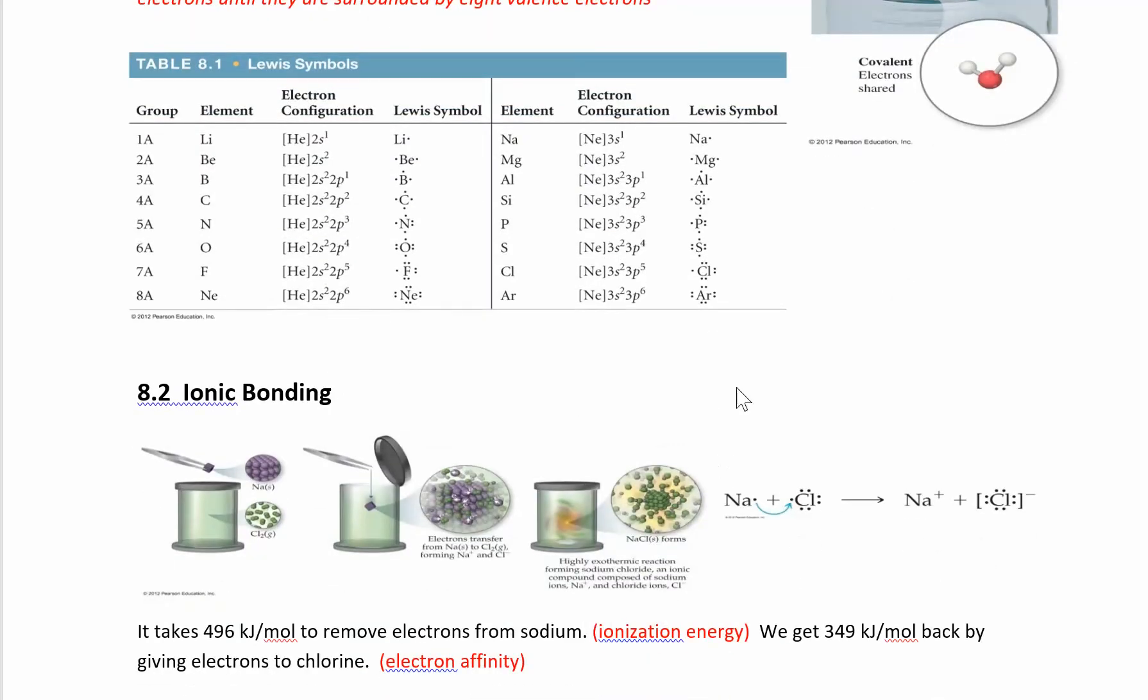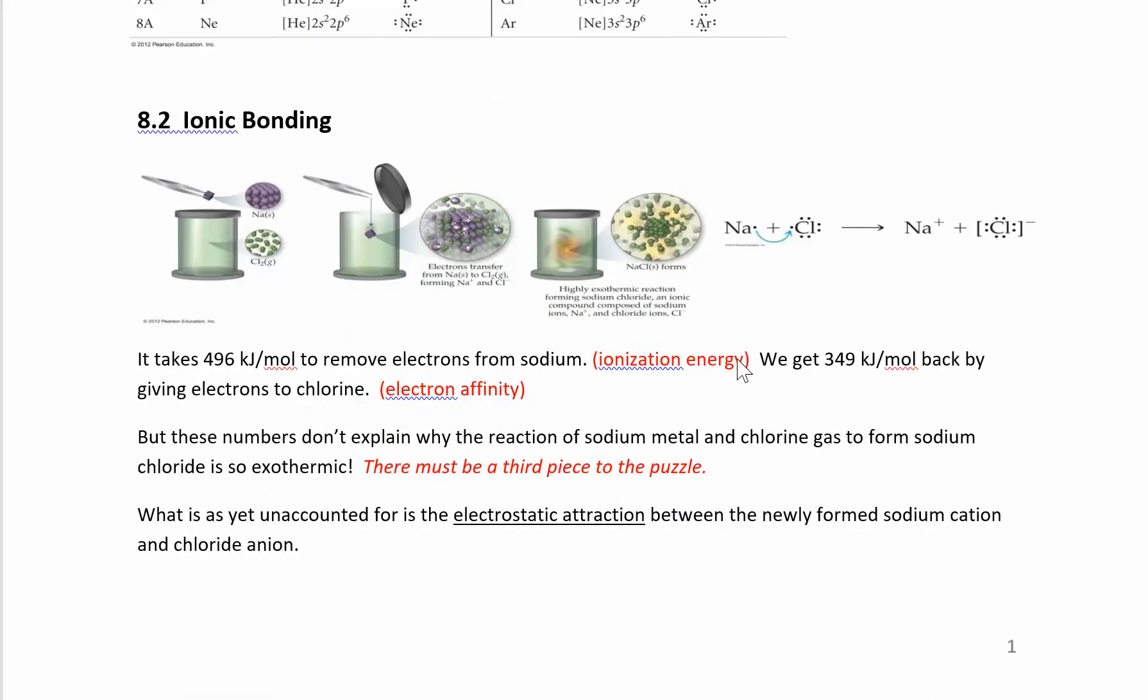So let's look more at ionic bonding. This is a picture of taking sodium, solid sodium metal, and if you drop it in a container of chlorine gas, you get this violent explosion. What you end up with is something really stable, sodium chloride, which is just salt. Sodium by itself is nasty. Chlorine gas is really nasty, but when you put them together, you get something so stable you can eat it and it won't hurt you. We all eat salt probably every day.